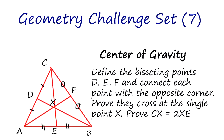Geometry Challenge Set 7: Center of Gravity of a Triangle. We connect the corner to the midpoint F, and the corner to the midpoint D. We connect C to this point and extend the line. We need to prove that this point divides that line in half, and that the length CX is twice as long as the other segment.